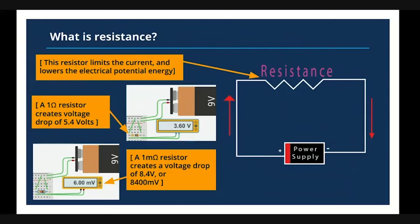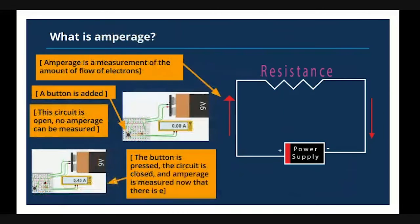A one-ohm resistor in this case would create a voltage drop of 5.4 volts, and a one-milliohm resistor will create a voltage drop of 8.4 volts, which is nearly the entirety of the voltage that comes from the power supply — in this case, that 9-volt battery. In this example on the right-hand side, we can see how a power supply will have a positive terminal sending electricity through a circuit, which creates resistance, until it eventually feeds back to the negative terminal on the power supply.